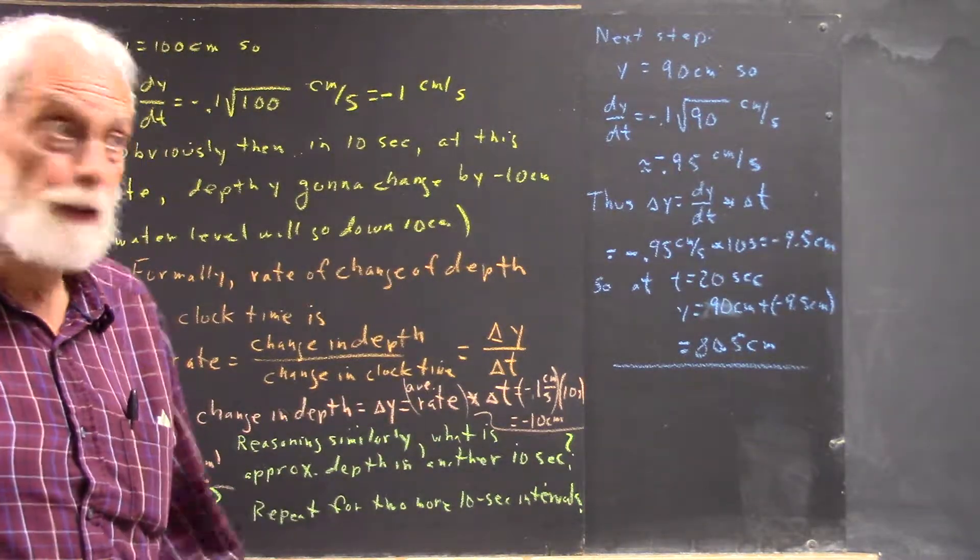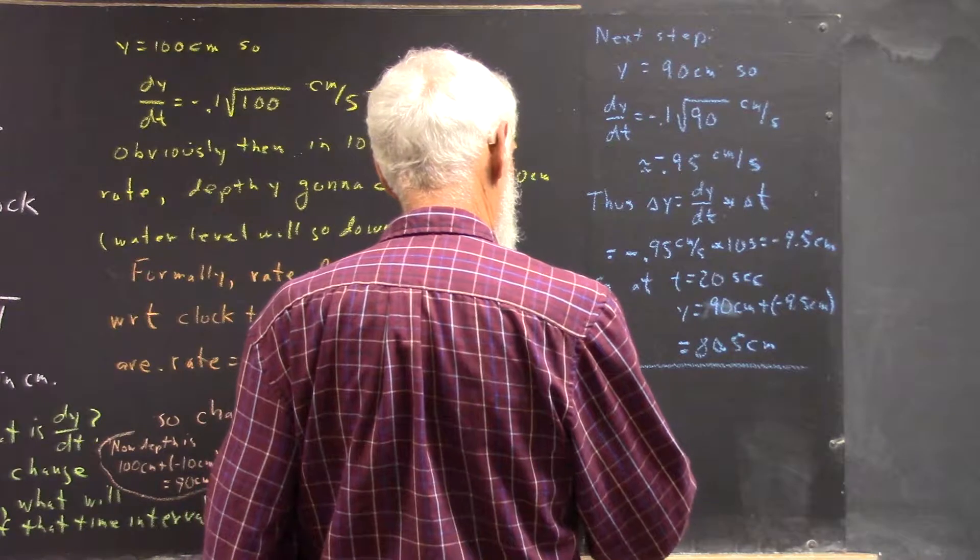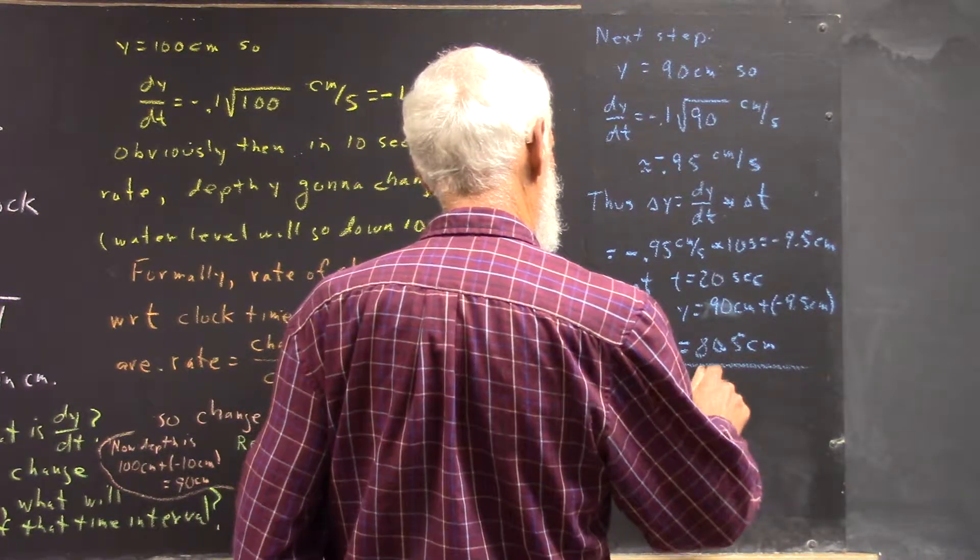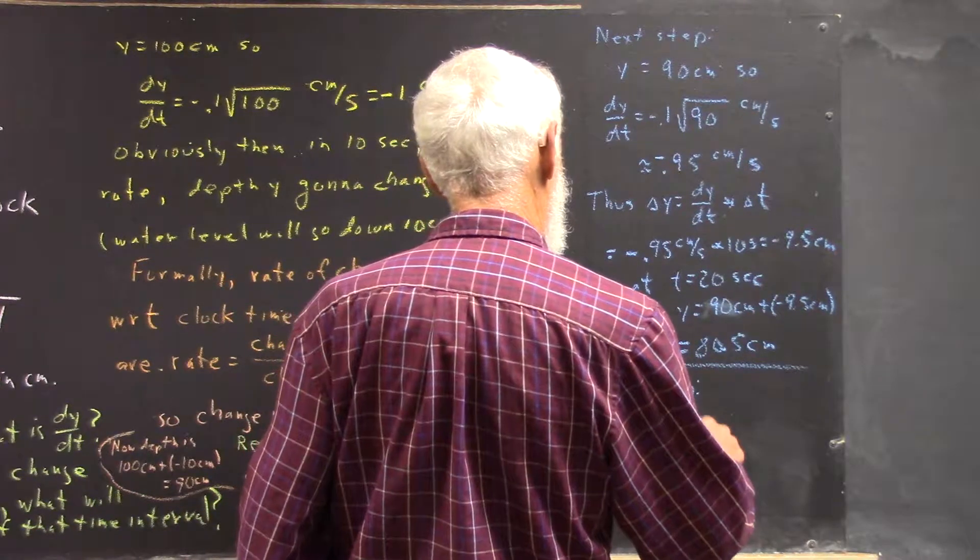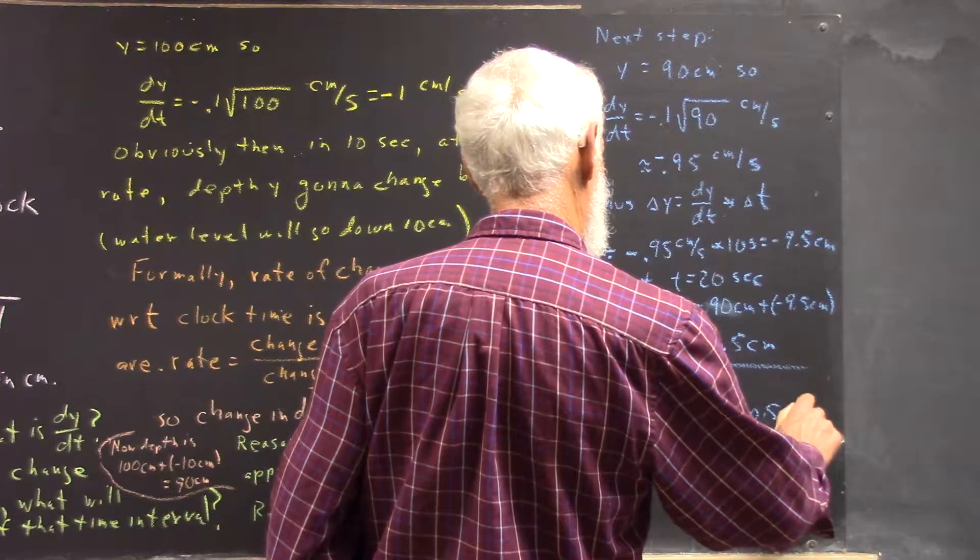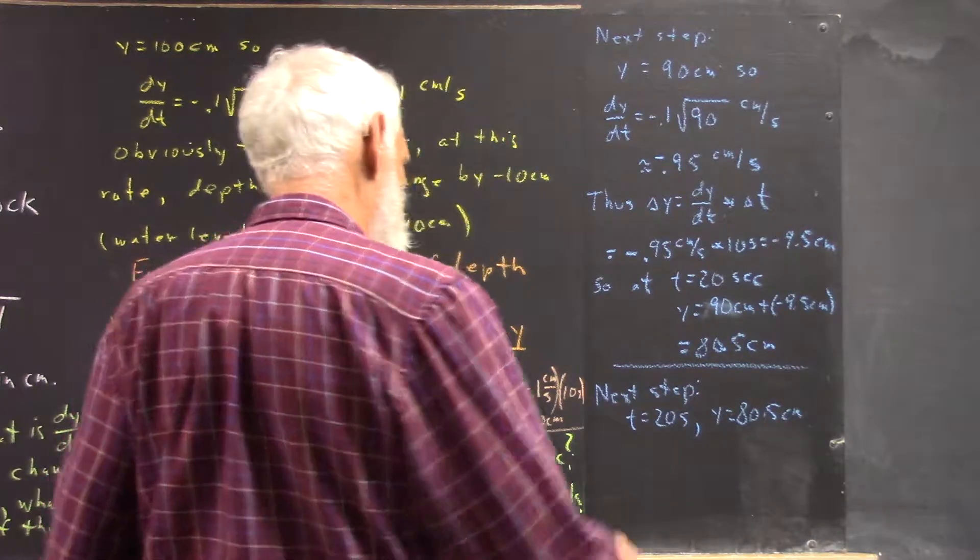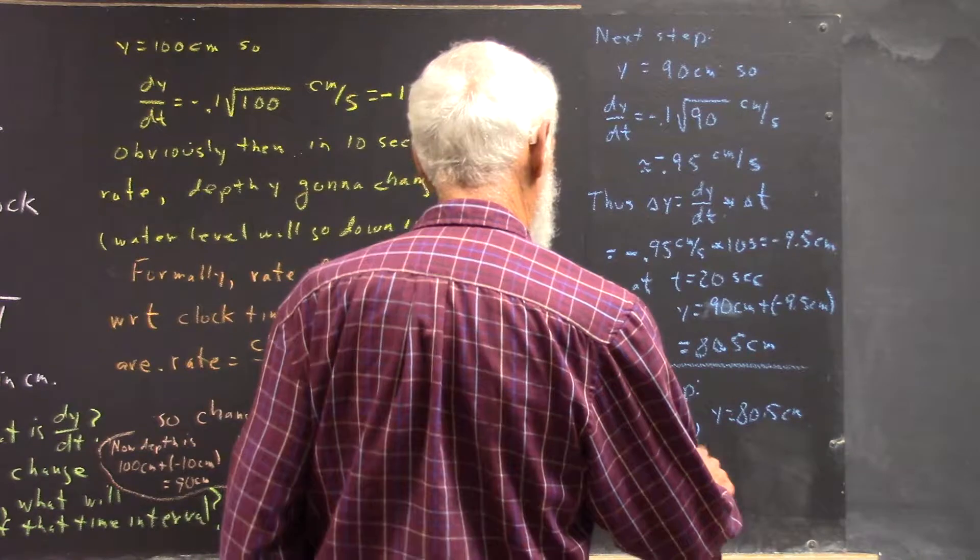Now, I say carry this for two more steps. So, I'm not going to write out the next step. I'm going to write out, t is 20 seconds, y equals 80.5 centimeters, and delta t is going to be 10 seconds, right?